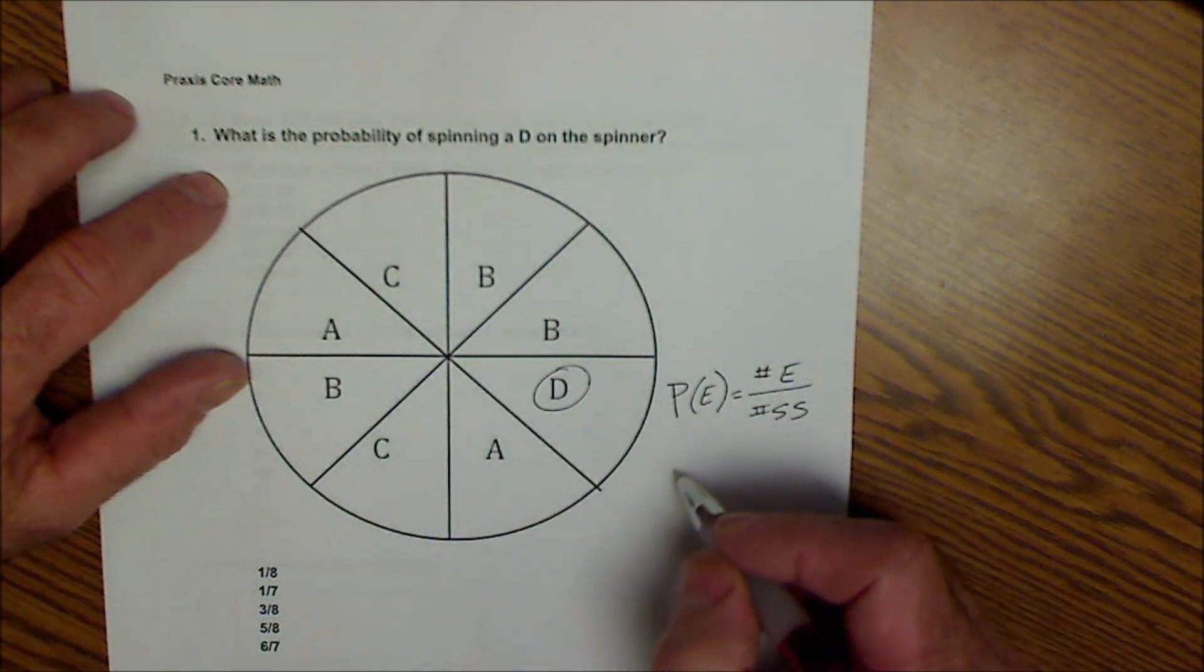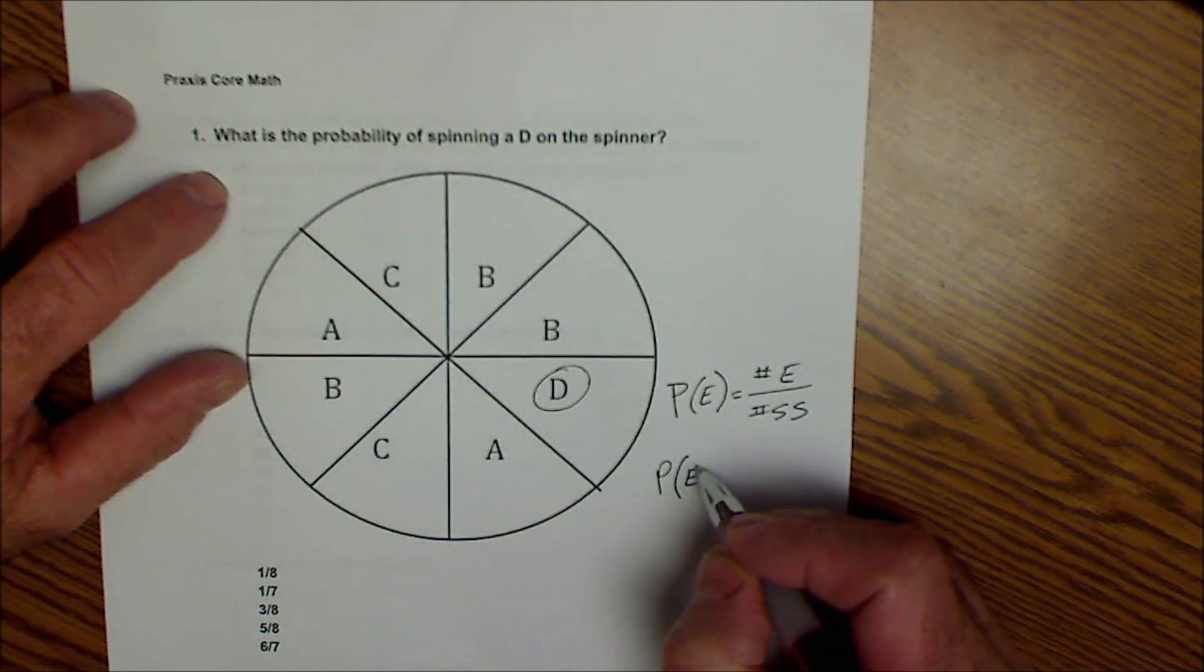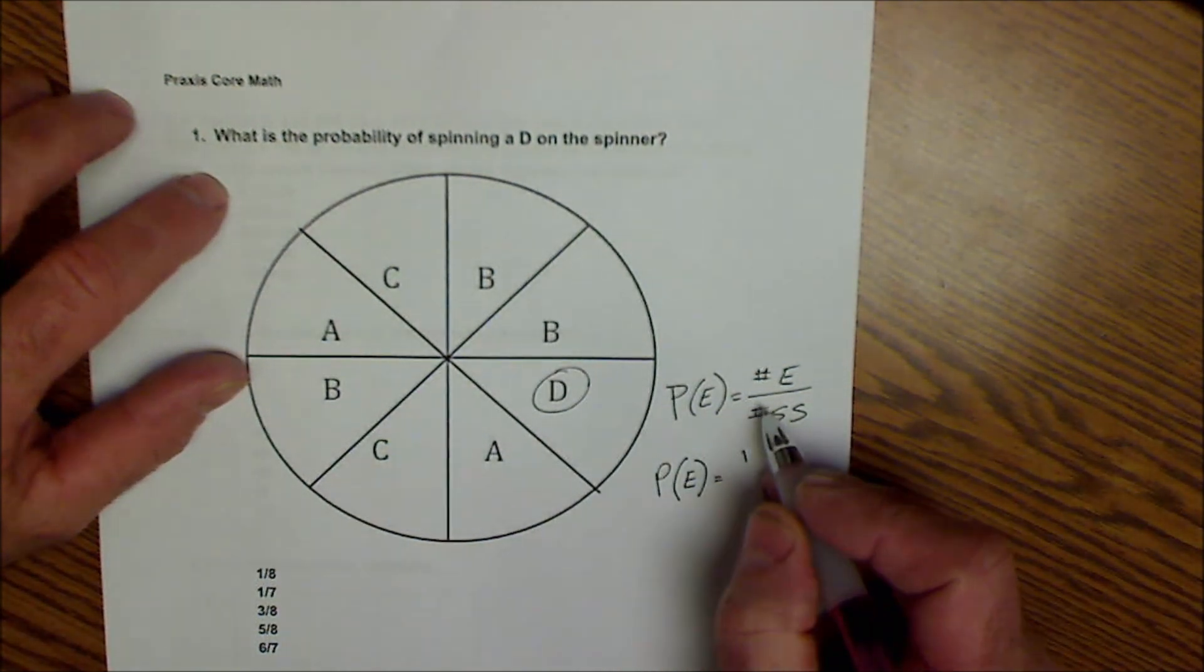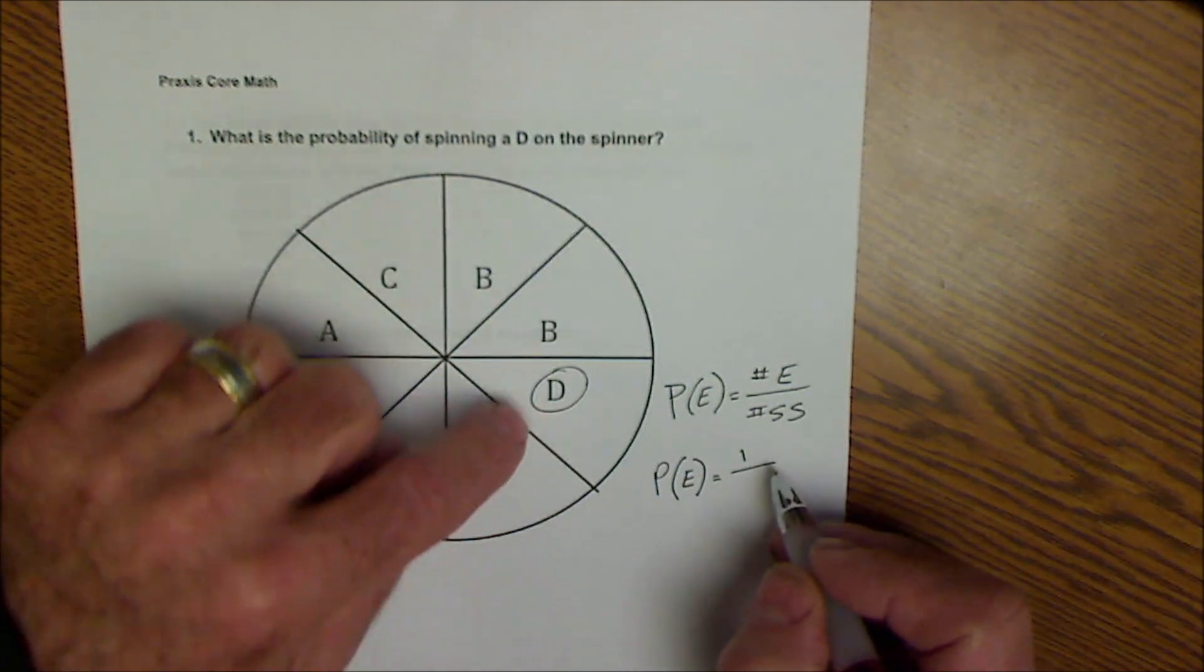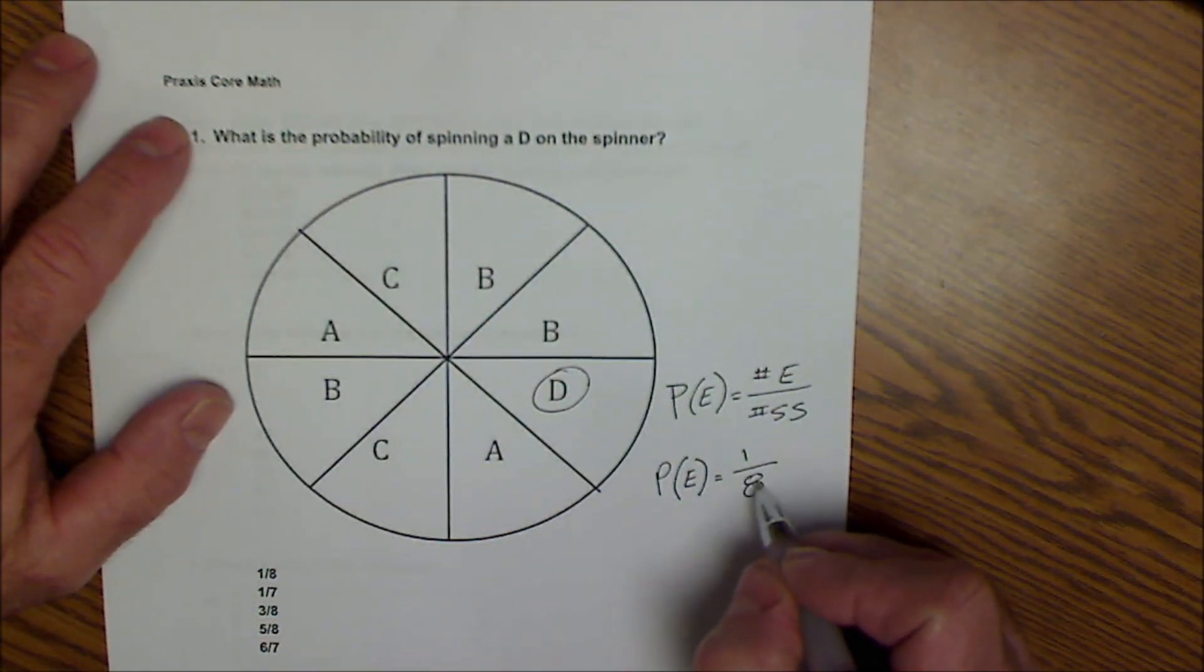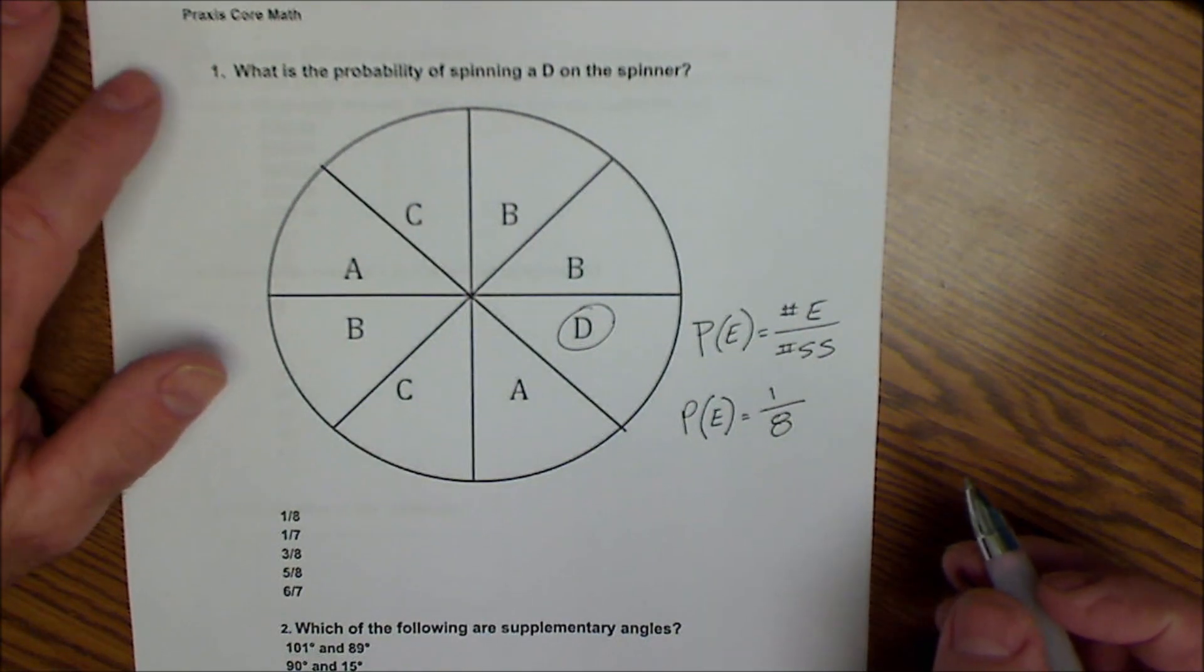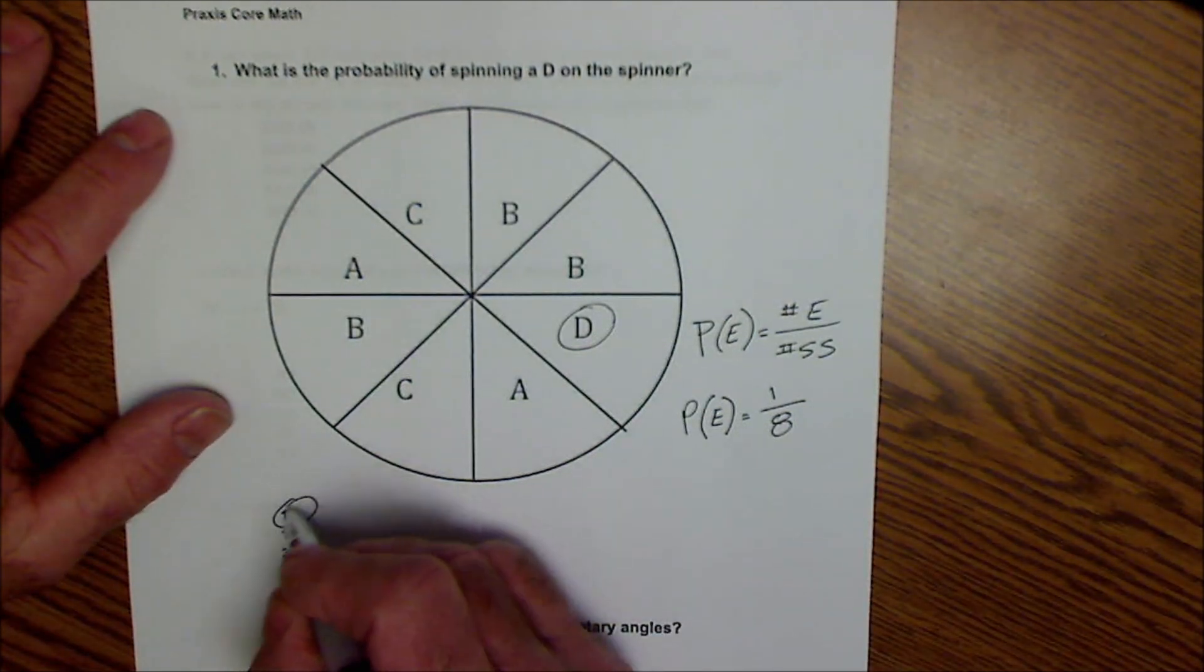They're all equal size. So the probability of getting the D would be the number in the event, getting a D, over the sample space of eight total units. So the probability is one eighth. There it is.